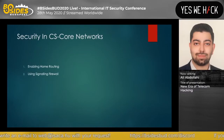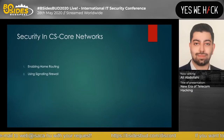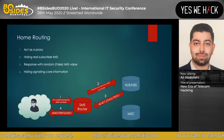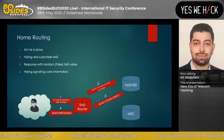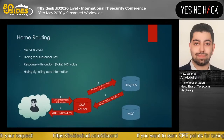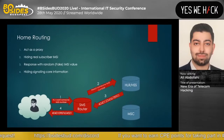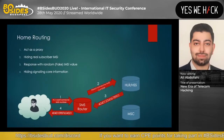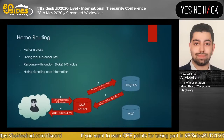Security in the Circuit Switch (CS) core network: the first mechanism is SMS Home Routing, and the second is Signaling Firewalls. Home Routing acts as a proxy. The definition of a Home Router is to hide the subscriber MSISDN, which is very valuable information for performing hacking scenarios. As you can see, a hacker requests the MSISDN from the HLR/HSS, and the HLR/HSS responds with the real value; however, the Home Router changes the value with a fake one.